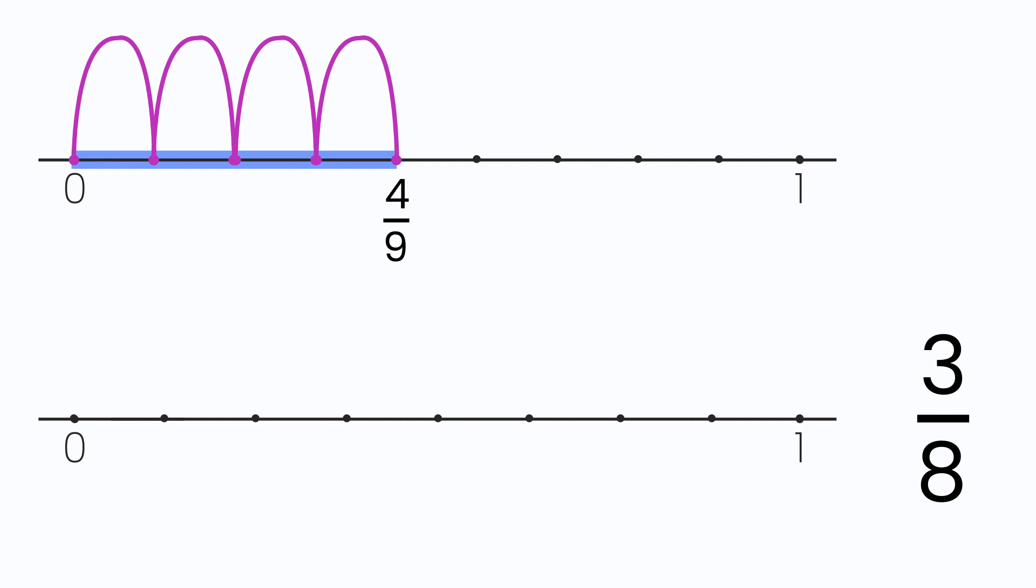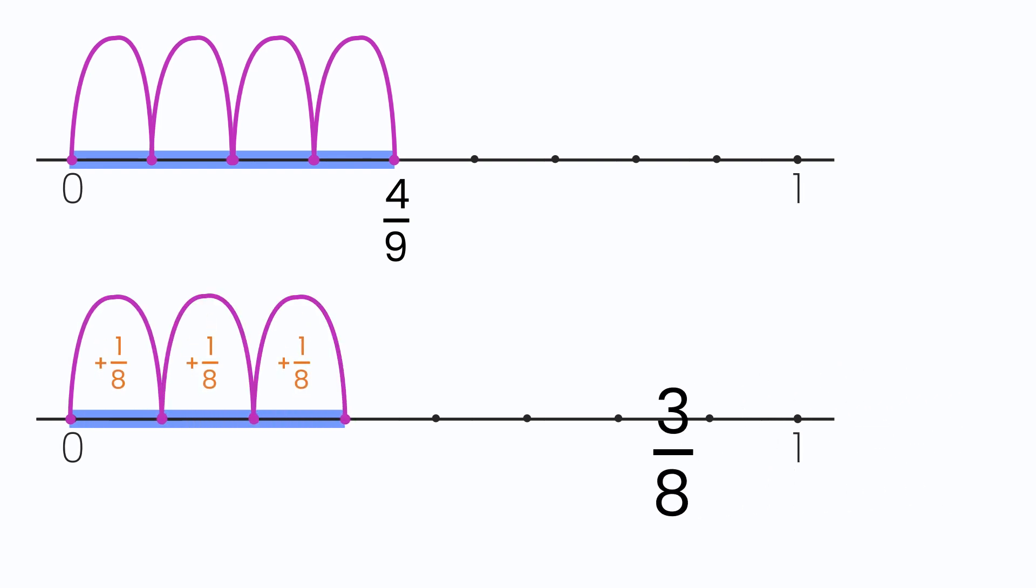Next, you do the same with three-eighths. Start at zero and jump as many places as the number of the numerator, in this case, three places.